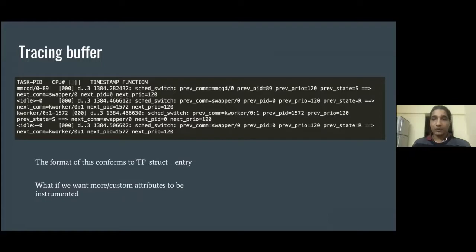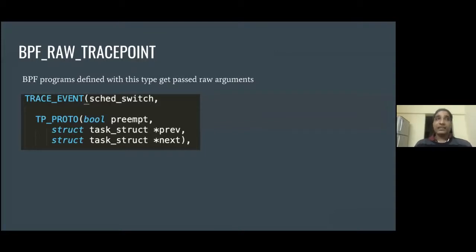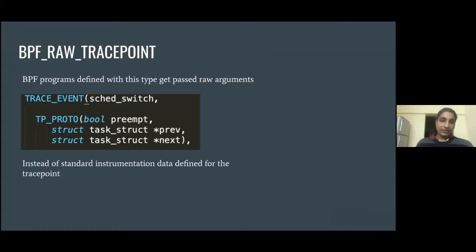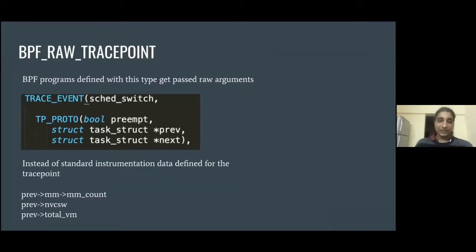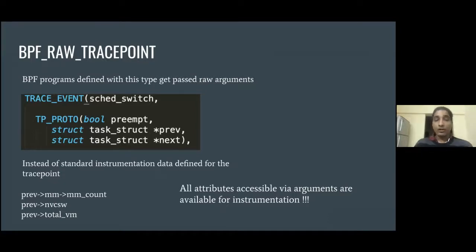What if we want more attributes or more information to be instrumented? Yes, we can do that. If we define BPF programs with the BPF raw trace point type, then we get passed all the arguments which are defined in a trace point. In this case, if we define a BPF program, that program will get passed the preempt flag, the task pointer, the previous task pointer, and the next task pointer. So whatever information is there in the previous task pointer and next task pointer, we can instrument that and serve our purpose. All attributes accessible via these arguments are available for instrumentation.